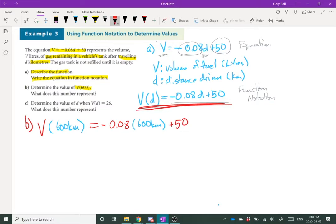All right. On the right-hand side, let's figure out what those numbers are. Negative 0.08 times 600 should give me negative 48. And I've got plus 50. Negative 48 plus 50 gives me 2.